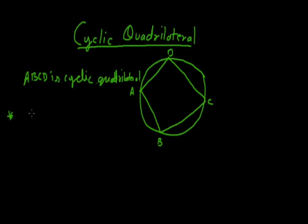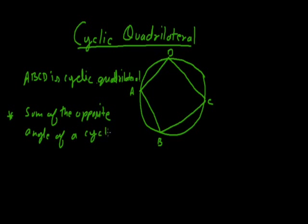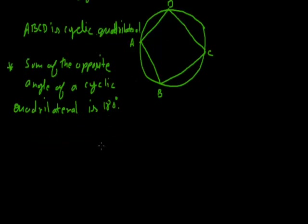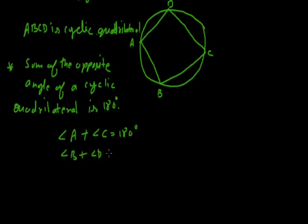The sum of the opposite angles of a cyclic quadrilateral is 180 degrees. Let's see the proof of this. We have to prove that the sum of the opposite angles of a cyclic quadrilateral is 180 degrees.